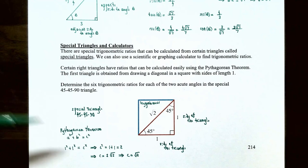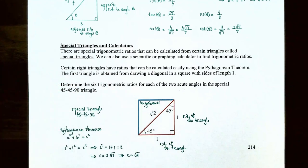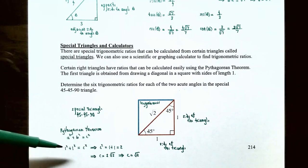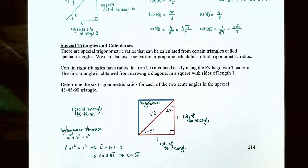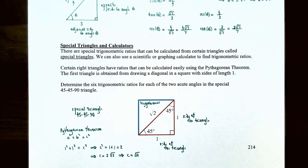A right triangle is formed in the corner of the square. Using the Pythagorean theorem: 1² + 1² = C², so C² = 2, and C = √2. This triangle with hypotenuse √2 and two sides of length 1 each is called a 45-45-90 triangle.